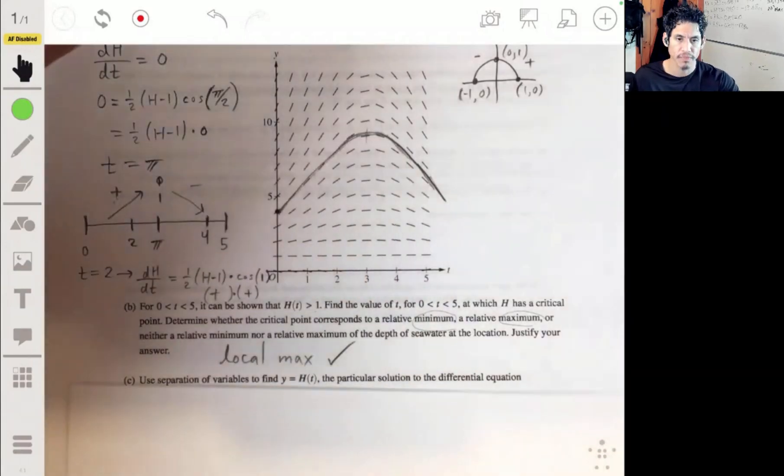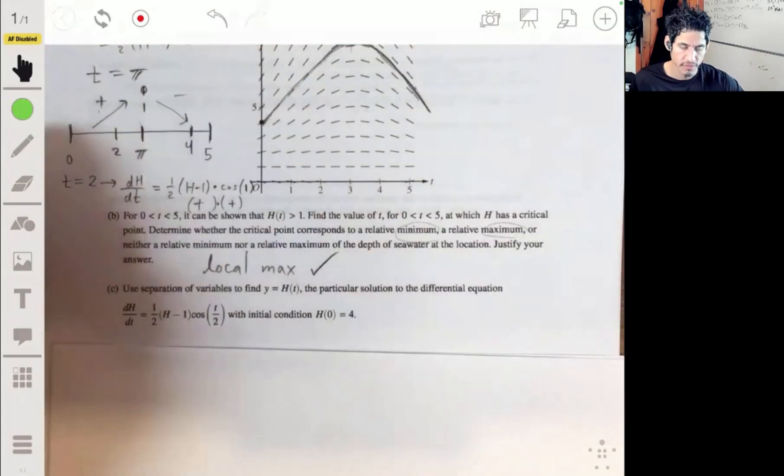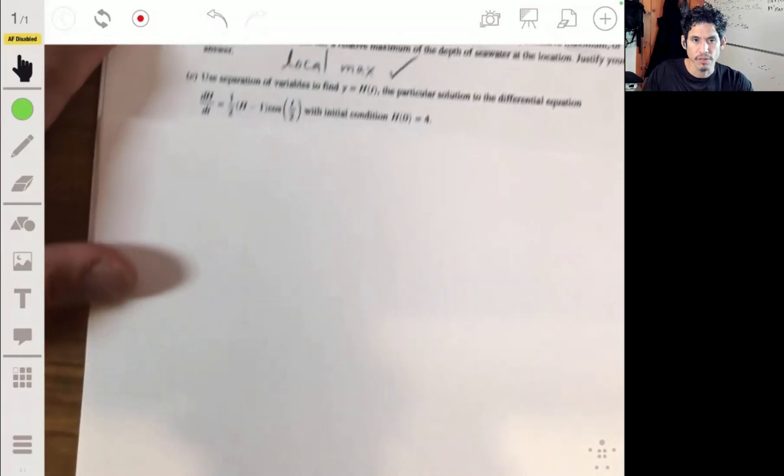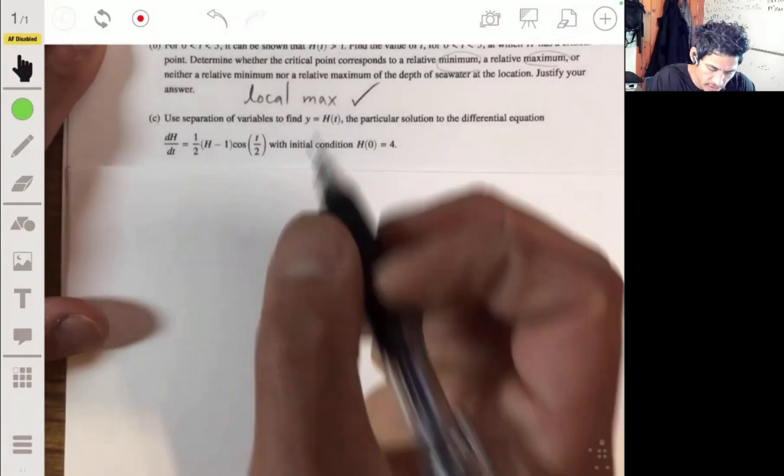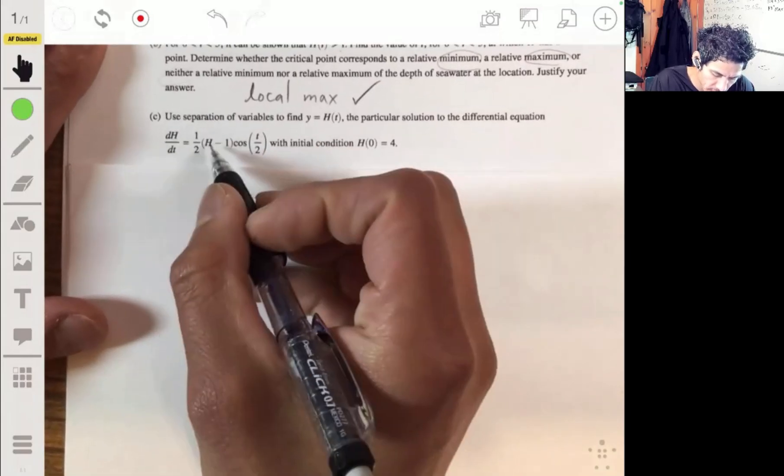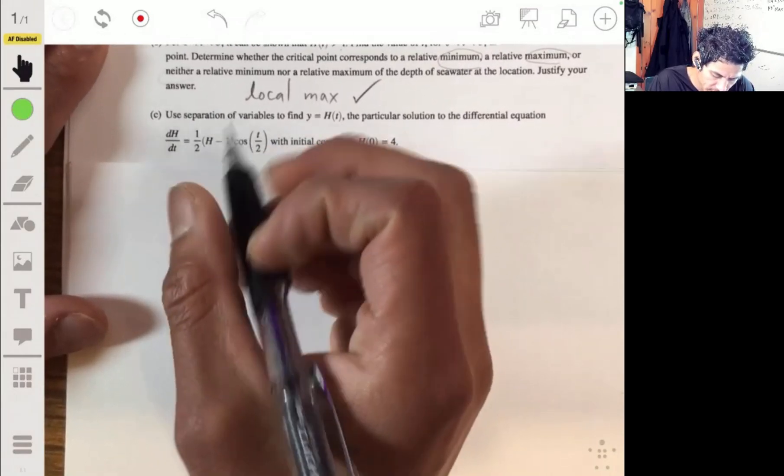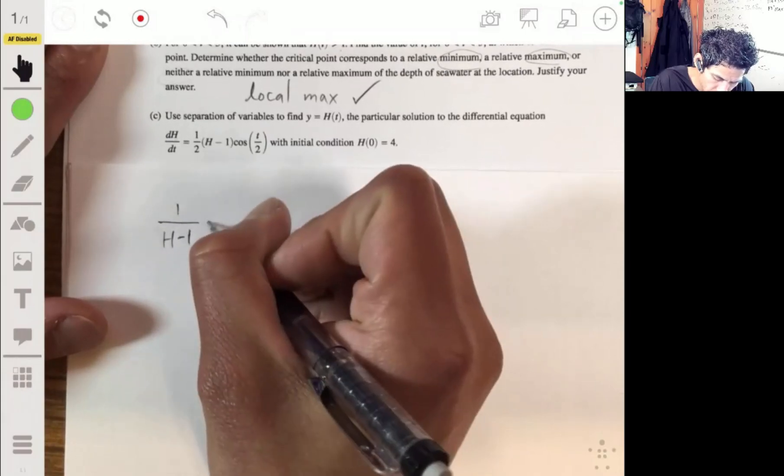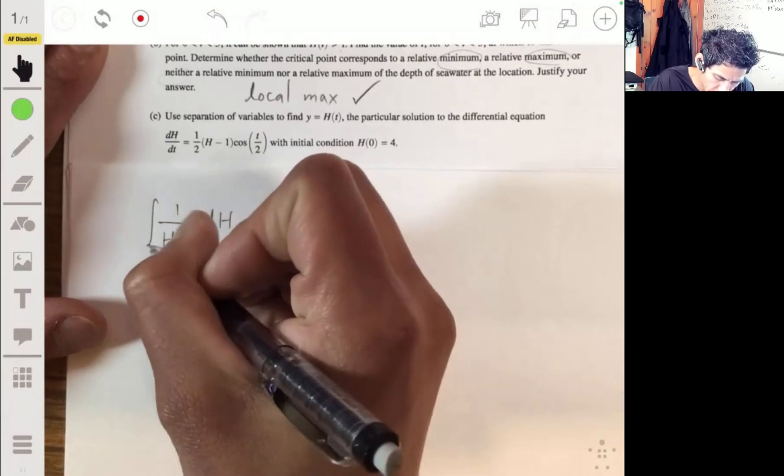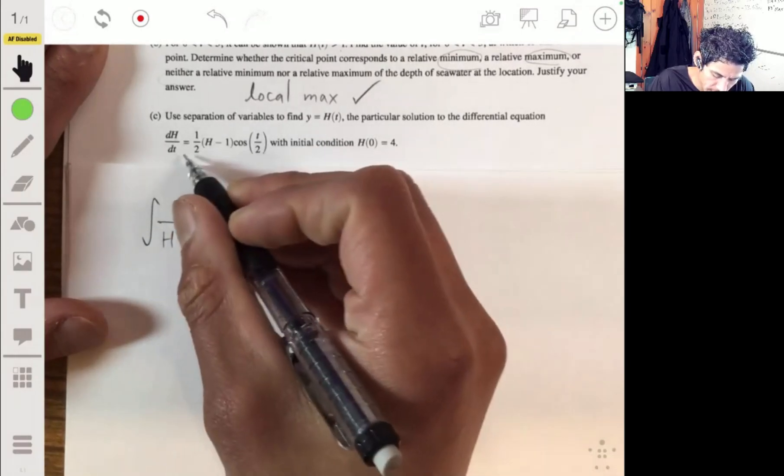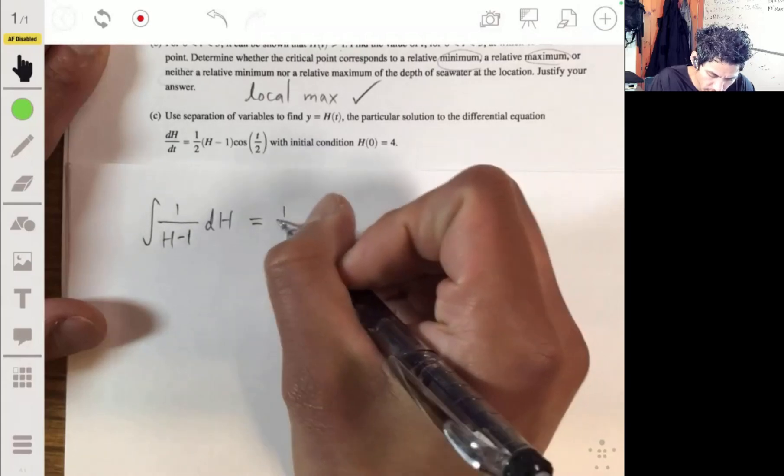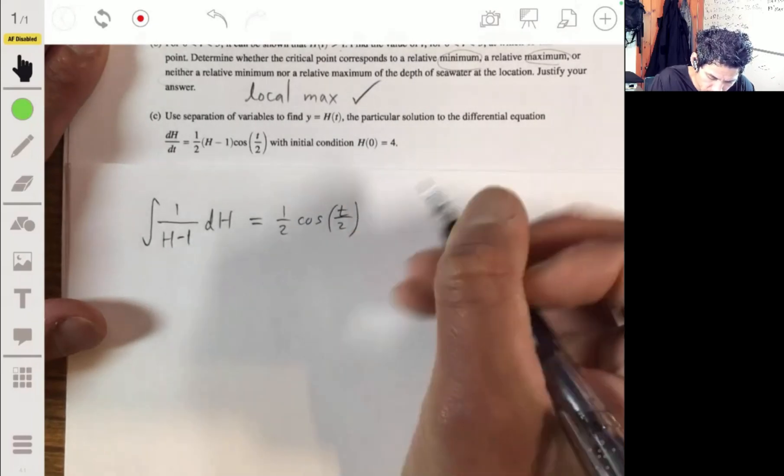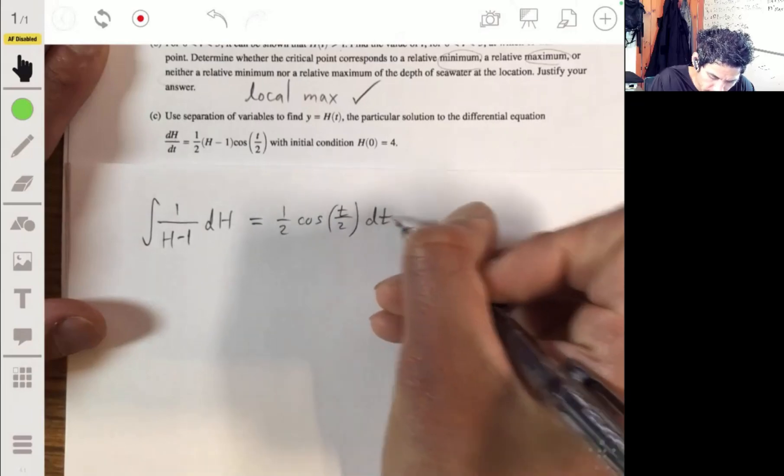All right. So let me just break it down on this clean sheet of white paper so we can see the work nicely. All right. So let's separate this guy. So let's bring the h's to the left and keep the t's to the right. So we're going to divide by h minus one. So on the left, we'll have one over h minus one times dh integral of that set equal to multiply on the right by dt of one half times the cosine of t over two.